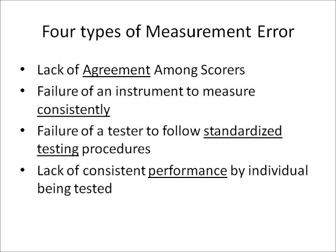The first type is lack of agreement among scorers — your blank there is 'agreement.' The next one is failure of an instrument to measure consistently — the blank is 'consistently.' Next is failure of a tester to follow standardized testing procedures — blank is 'standardized testing.' And the last one is lack of consistent performance by an individual being tested — blank is 'performance.'